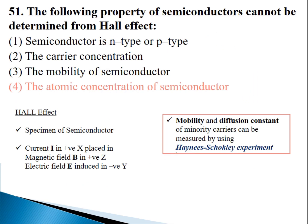The next question asks which property the Hall effect determines. The correct option is that it determines whether the semiconductor is N-type or P-type. The Hall effect also measures carrier concentration and carrier mobility. The last option — atomic concentration — is wrong, because Hall effect measures carrier concentration, not atomic concentration.